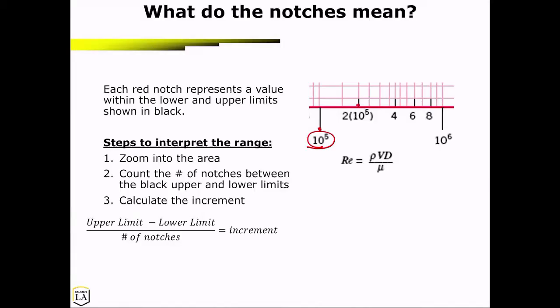So here is an example where we have our Reynolds number, and this is our x-axis, and we have 10 to the fifth power representing this black notch, and this black notch represents 2 times 10 to the fifth power. So those are what each notch means.